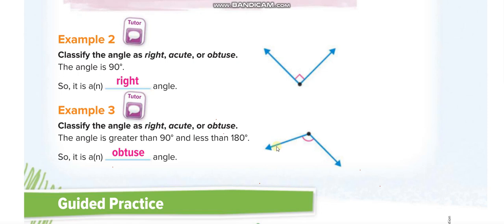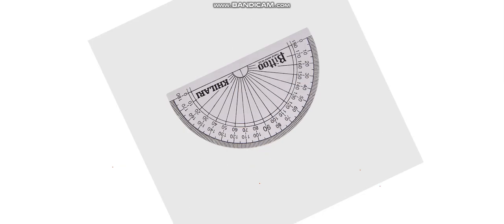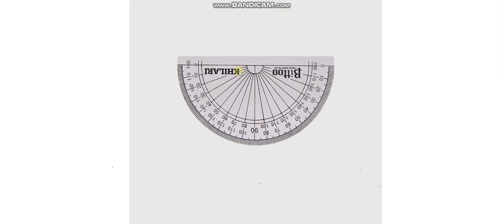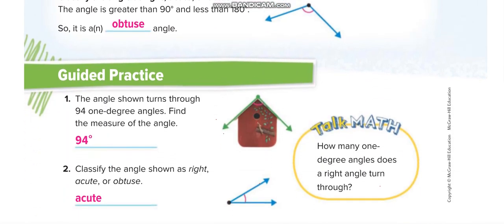And this one again, to find this angle, we have to put our protractor in the opposite way, and this way. Right, so we will see that it is more than 90, so it is an obtuse angle. Let us move down here.